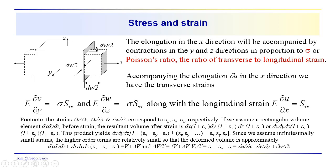We're noting here, this is a footnote. These strains are often abbreviated. The du/dx, dv/dy, dw/dz are abbreviated in terms of epsilon sub x, epsilon sub y, and epsilon sub z. These are the strains in the x, y, and z direction. We're assuming this rectangular volume. The volume element, the differential volume element, is dx, dy, dz, a very small volume before strain.